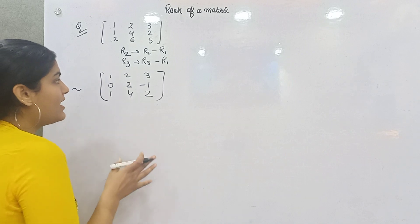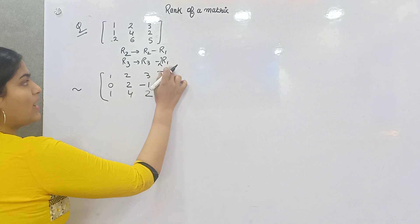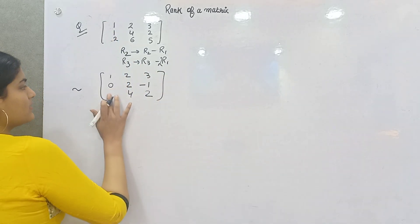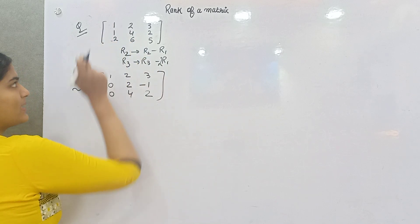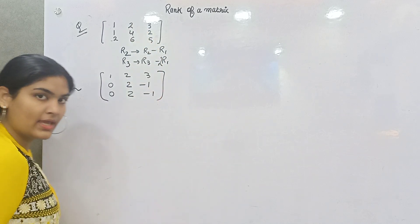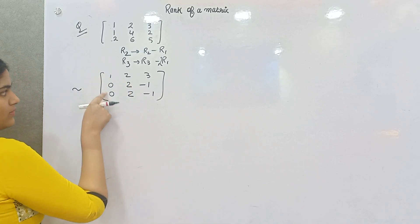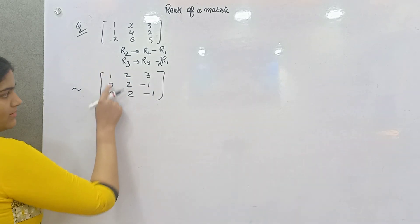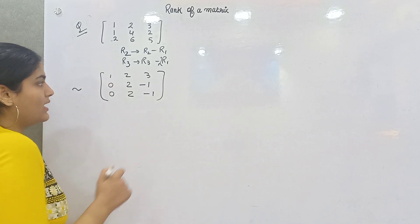After that, if you take 2R1 you can make another entry 0 as well: 2−2=0, 6 minus 2 times R1's second entry (2×2=4) gives 6−4=2, and 5−6=−1. Altogether you have made two zeros in this column, with 1 and 1 remaining.